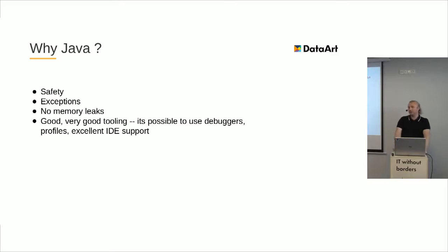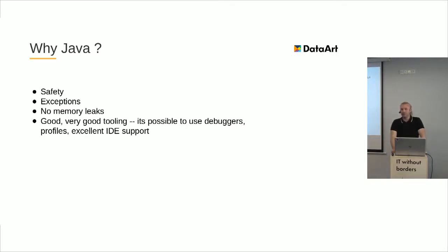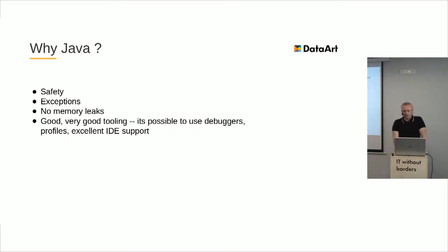So the main question is: why Java? Why write this just-in-time compiler in Java? The main point is safety. Java is a mature language with a very precise and formal specification. It provides exceptions, and it's possible to write code that can be formally verified. When you write Java code, it's possible to use different tools — debuggers, profilers — and it has excellent IDE support. With all these tools, it's possible to write code that has no memory leaks and, especially using debugging, allows verifying corner cases during development of the compiler.